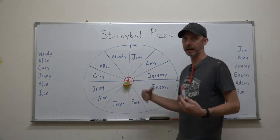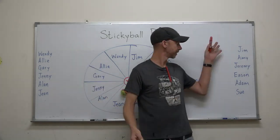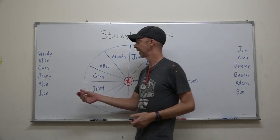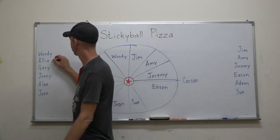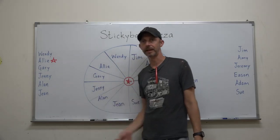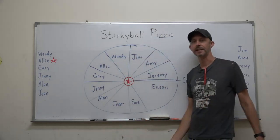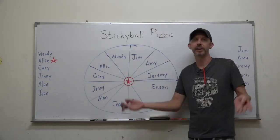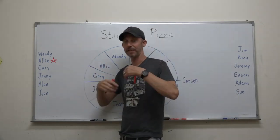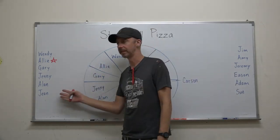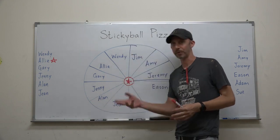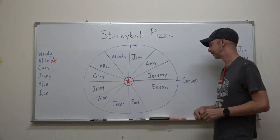I'll write each student's name on the side of the whiteboard for really little classes. If that was Allie — good job — Allie gets a star. This helps them earn a bigger reward at the end of class, maybe stickers or whatever. Kids like to have more stars than their classmates, even if they mean nothing. It's a small reward for playing the game and playing well.